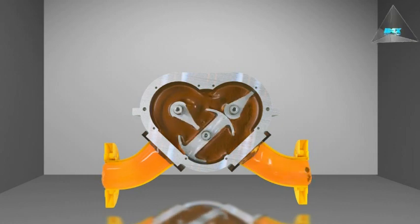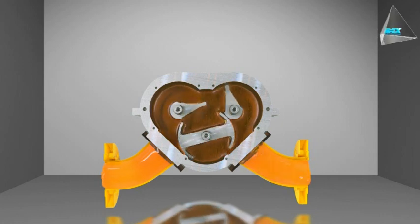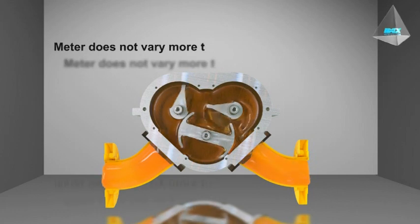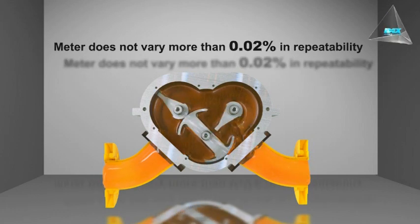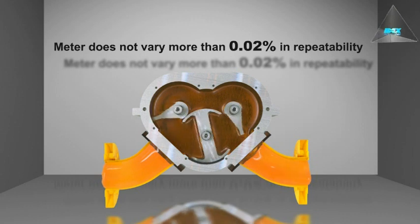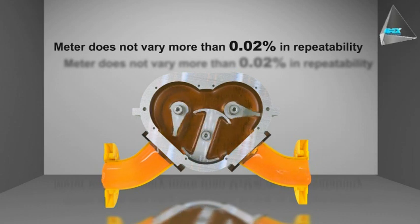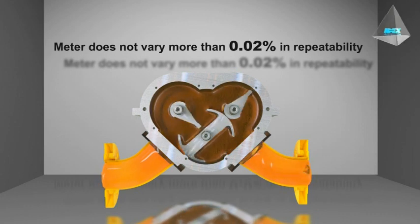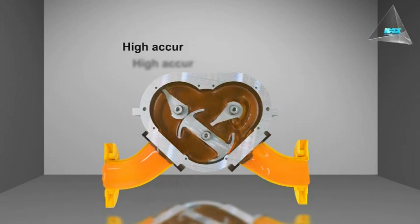With all other conditions being constant, the LC meter does not vary more than 0.02% in repeatability over the entire range of flow and has a very high accuracy of plus or minus 0.05%. There is no metal-to-metal contact within the metering element.